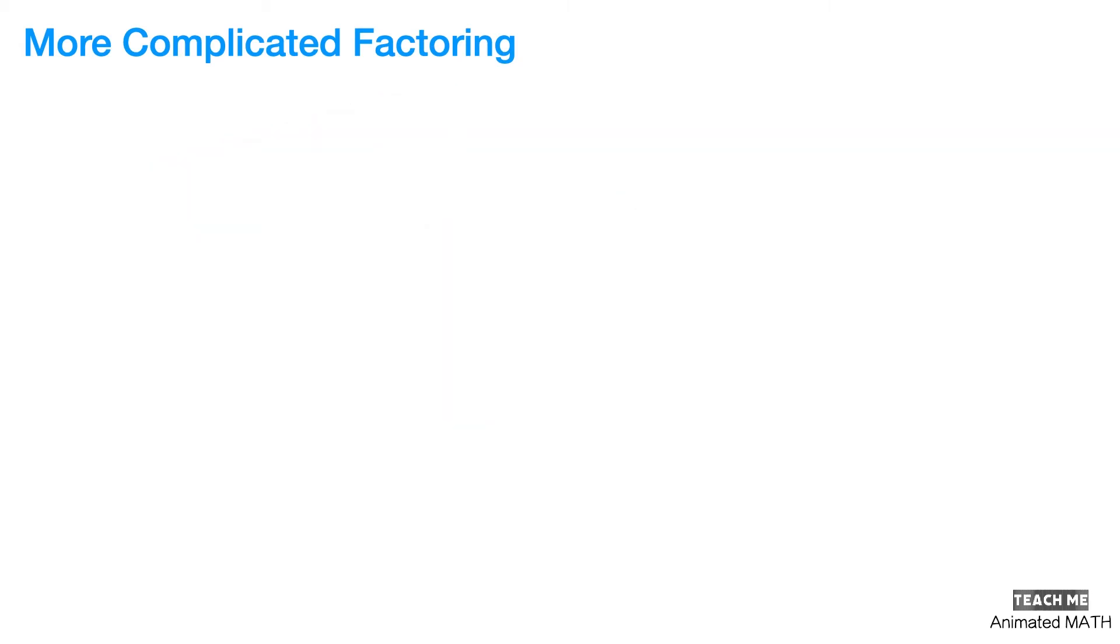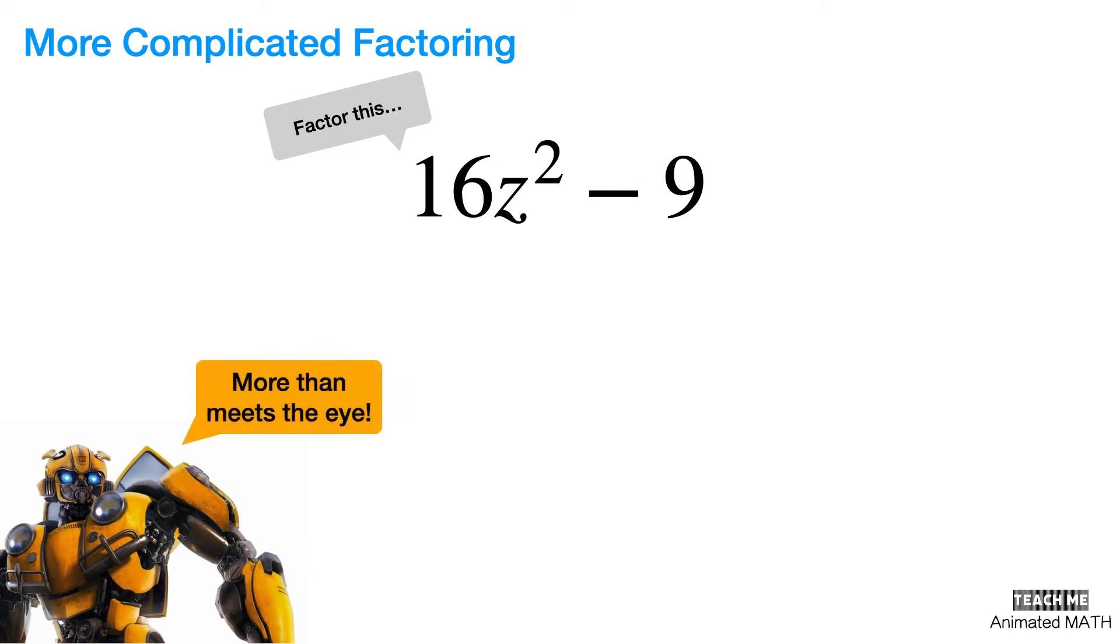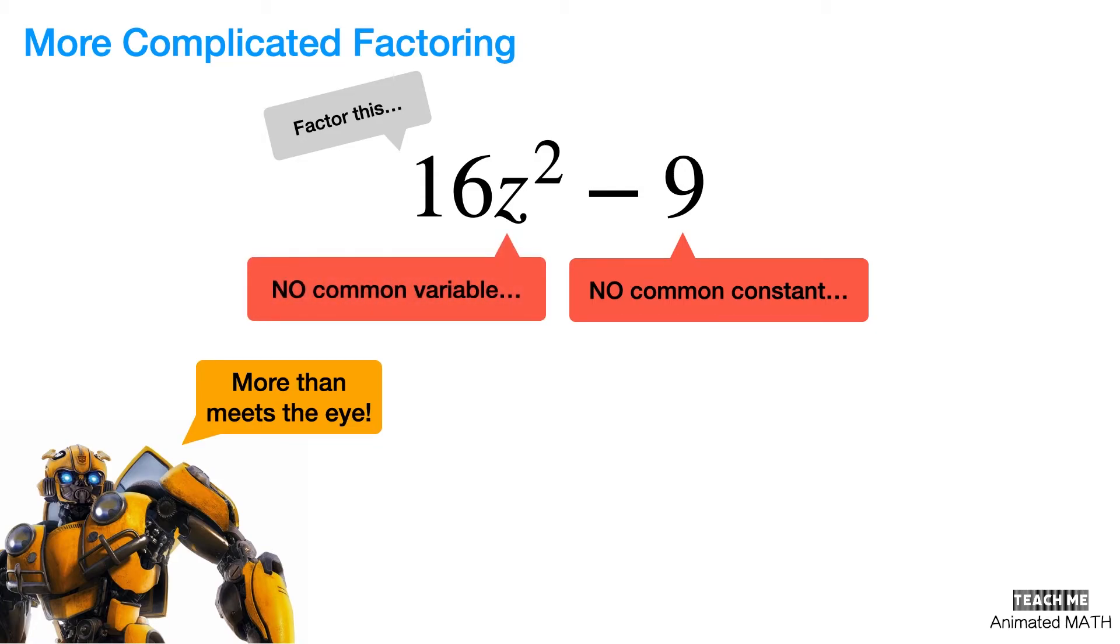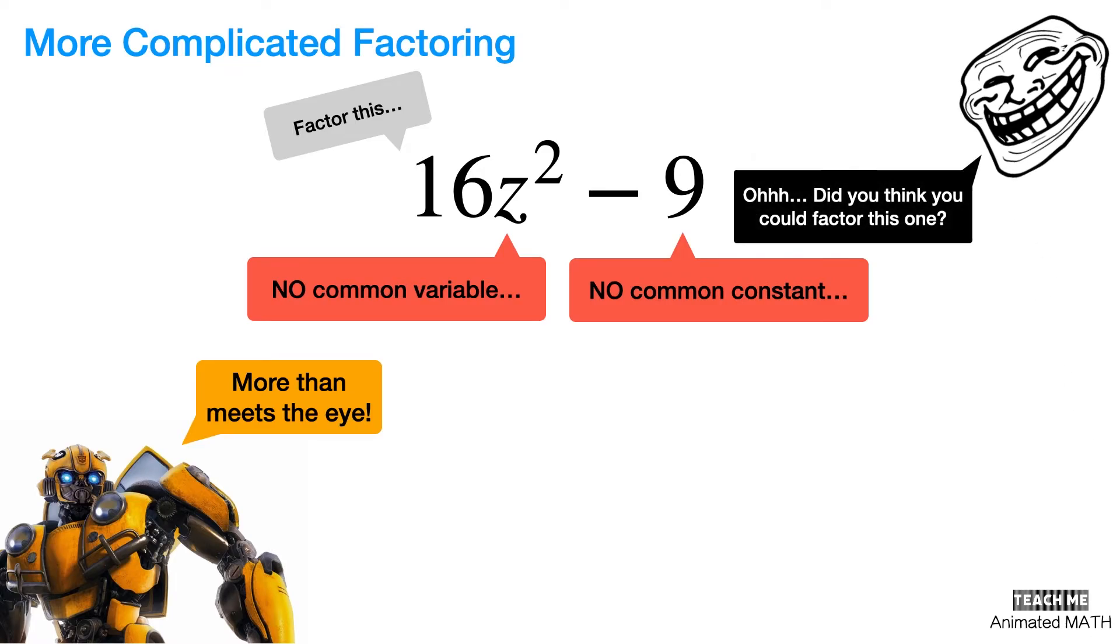And on we go to the next example. At first glance, there doesn't seem to be any kind of common factor because there is no common constant between 16z squared and 9. And there is no common variable either. So, do you think I'm just trolling you around and there really is no way to factor this binomial? Of course not!